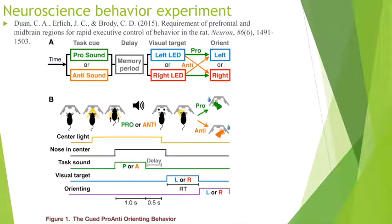Under pro rule, a water-deprived rat should orient to the same direction as the visual target. After a correct response, the rat can get water as reward. Under anti rule, the rat must orient to the opposite direction as the visual target to get reward.